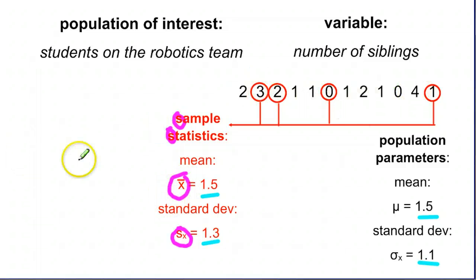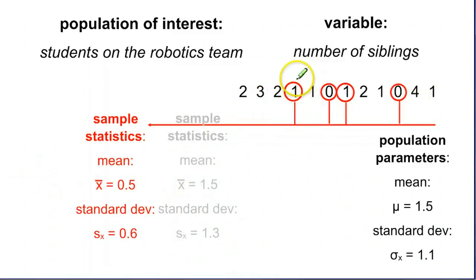Let's say we get a different sample. Because it's random, we could get any random four, and let's say we get these four now. We get a 1, a 0, a 1, and a 0. The average of those four numbers is 0.5, and the standard deviation is 0.6. Now you're starting to get a little ways off from our population parameters, the actual values of the entire population, because we happen to sample a bunch of people with very few siblings. So you might get a very low number.